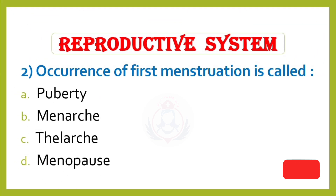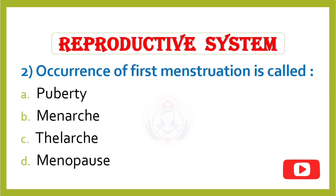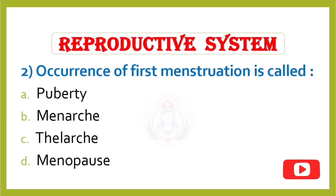Question 2. Occurrence of first menstruation is called: Option A – Puberty, Option B – Menarche, Option C – Thelarche, Option D – Menopause. Correct answer is Option B: Menarche.